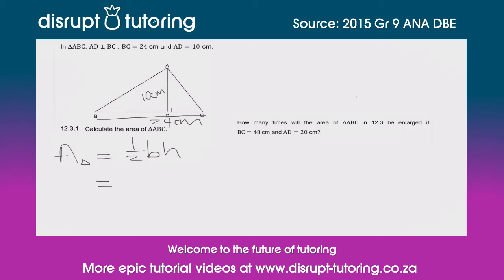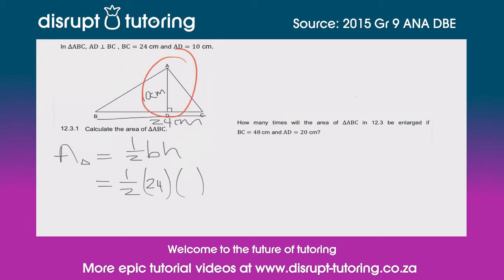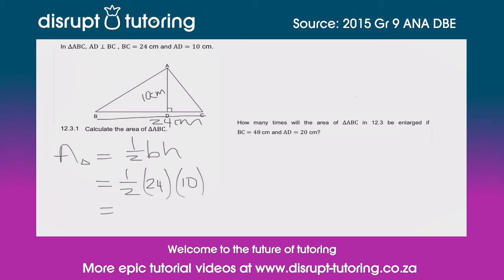So we know: area = half base times height. Our base is the 24 centimeters provided, and our height is AD which is 10. Without a calculator: half times 24 is simply 12, and 12 times 10 gives us 120.